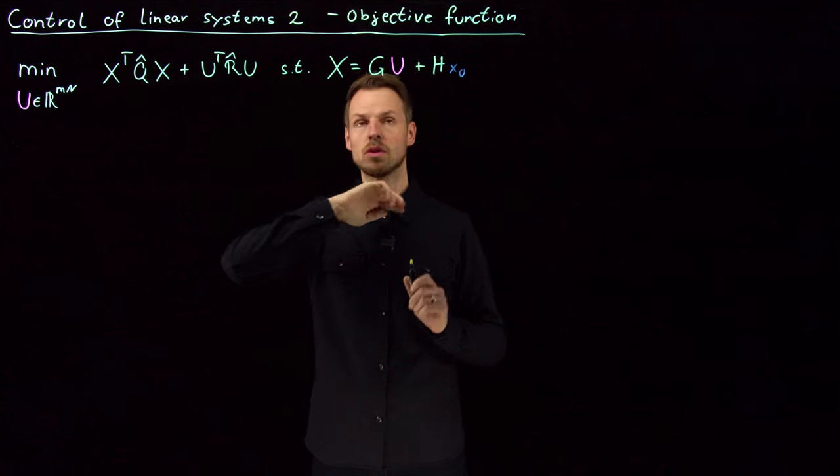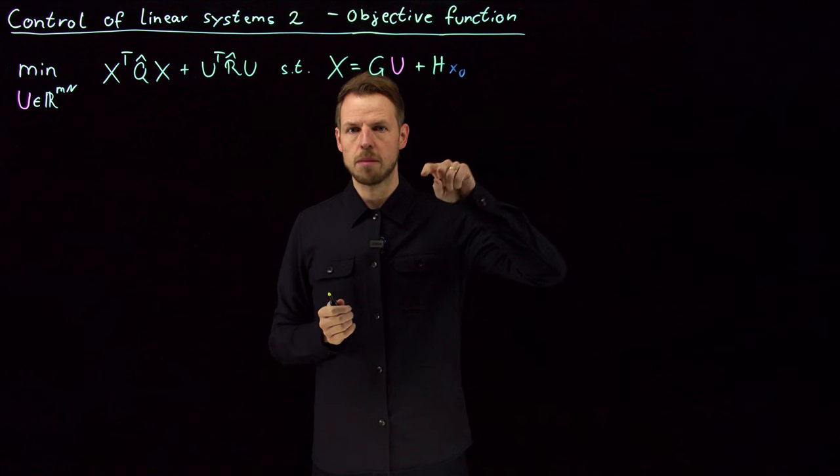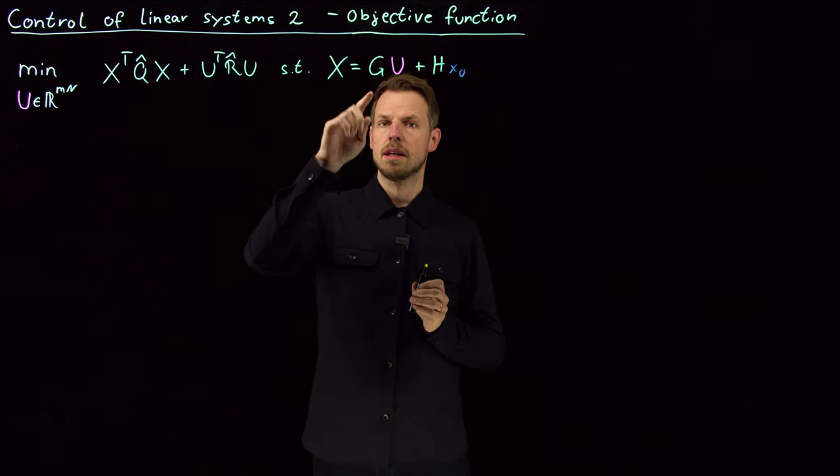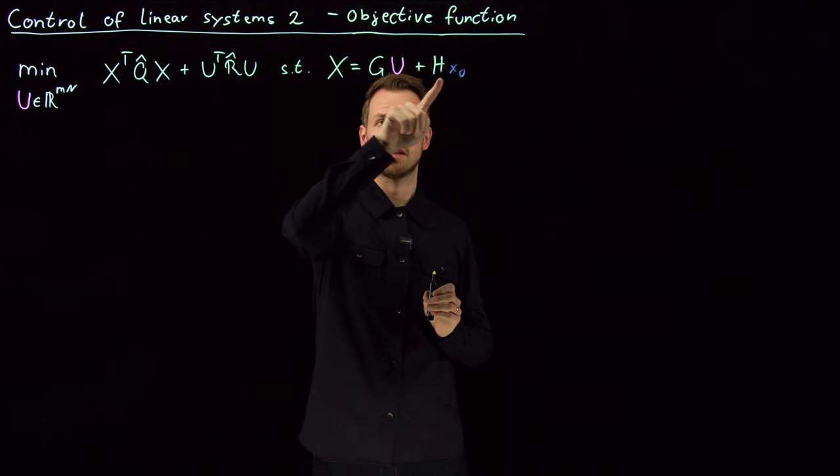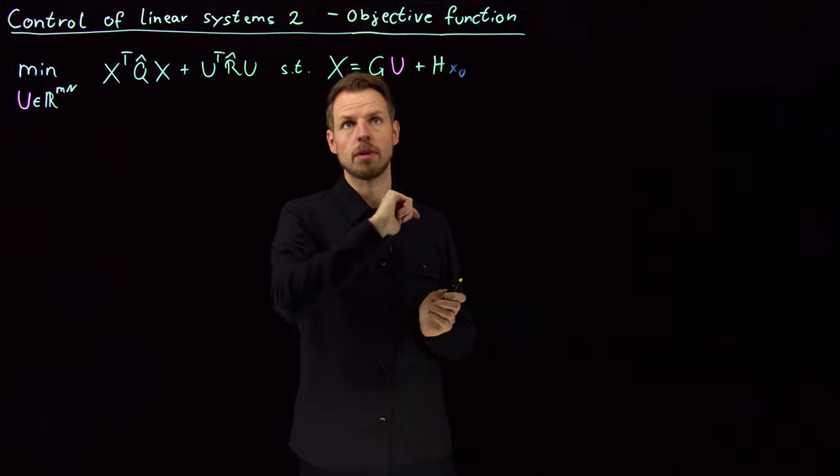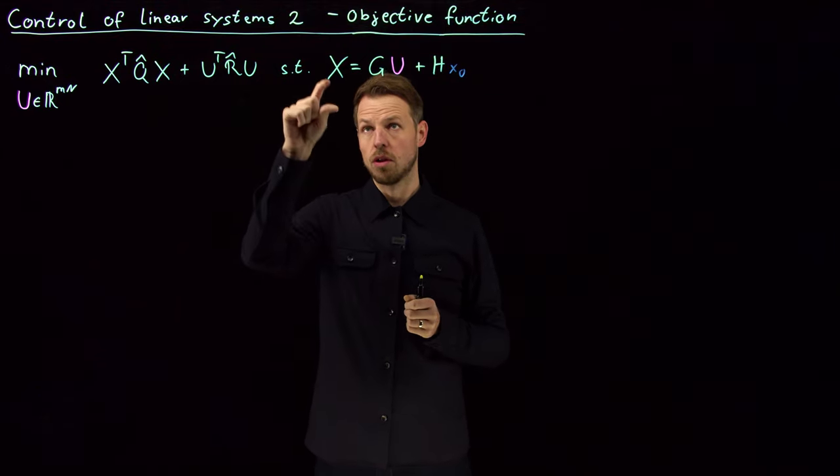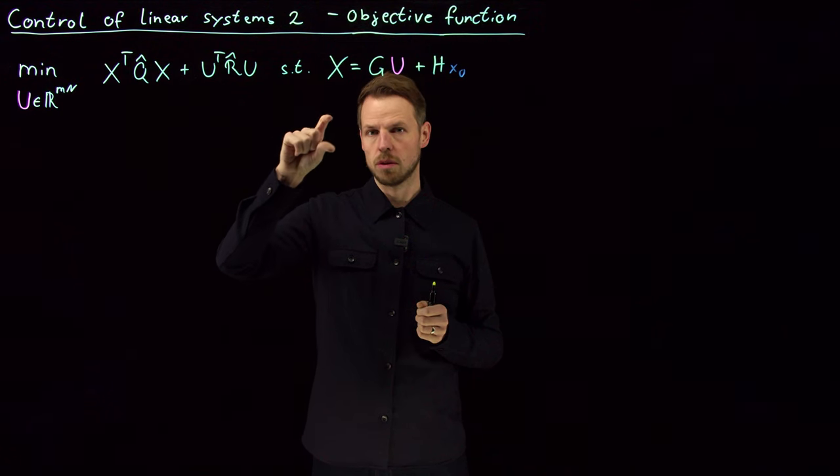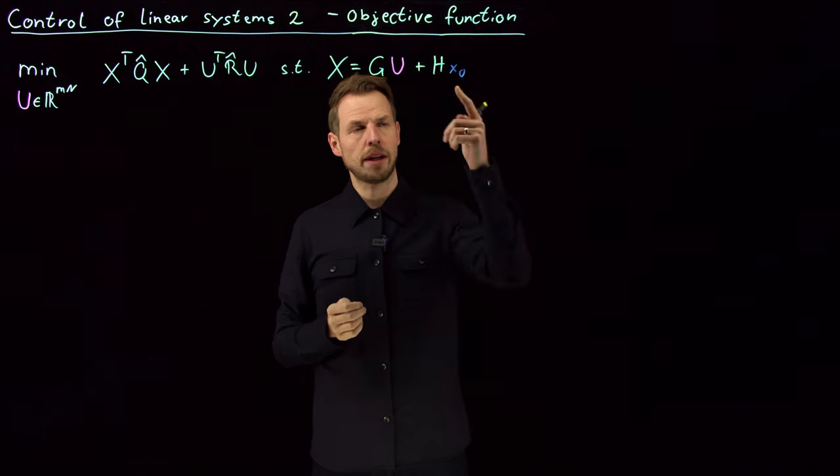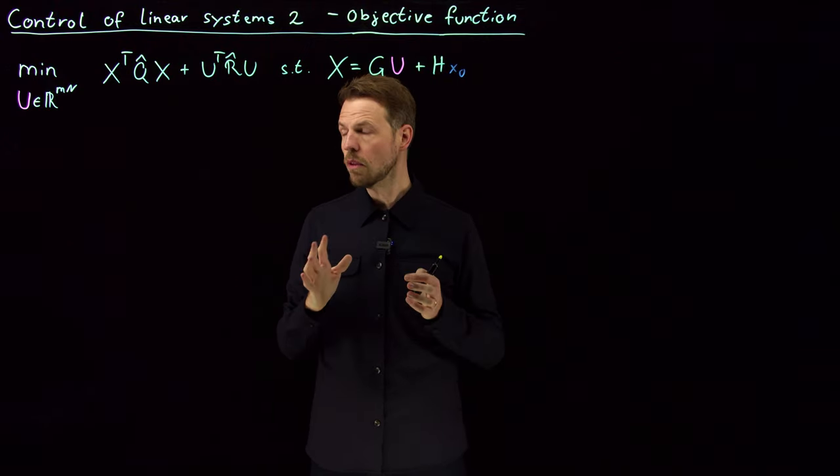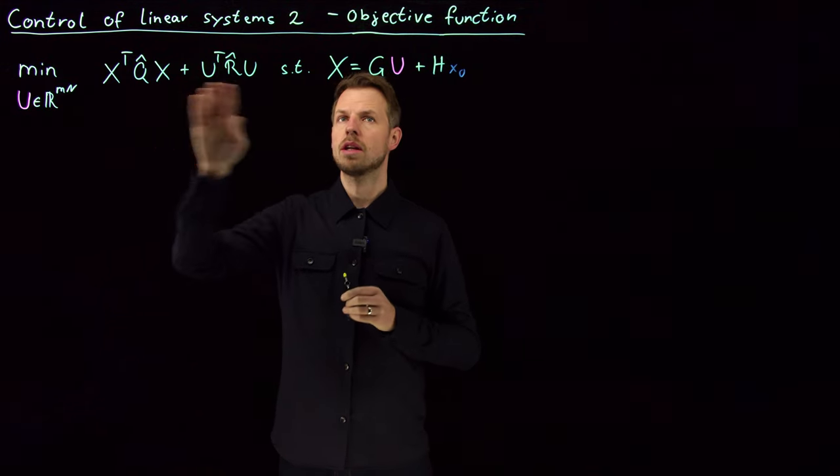In particular if we're dealing with linear systems. But what we had in the end was just a rewriting of the constraints. We saw there is a recursion, xk plus 1 equals A times xk plus B times uk, and out of A and B we could construct these giant G matrices and also very large H matrix to make every part of this big x vector a function of the past inputs plus the initial condition. So what we want to do now is minimize over U only, no longer over x.